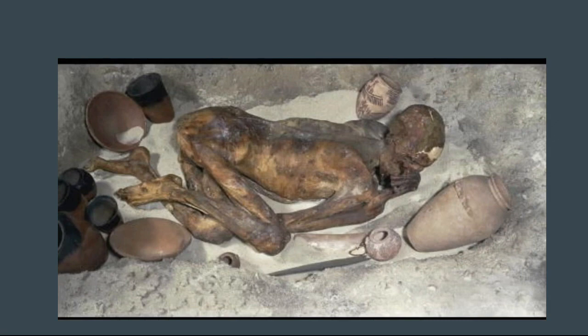Here we actually have a picture of Ginger, who's the oldest Egyptian mummy. Ginger's a man — he has red hair, and that's how he got that nickname. He was about 21 years old when he died. He's a good example of intentional mummification with no chemicals used. His body was placed in a shallow grave in direct contact with the dry, hot sands of Egypt, which just sucked all the water out of his body and mummified him.